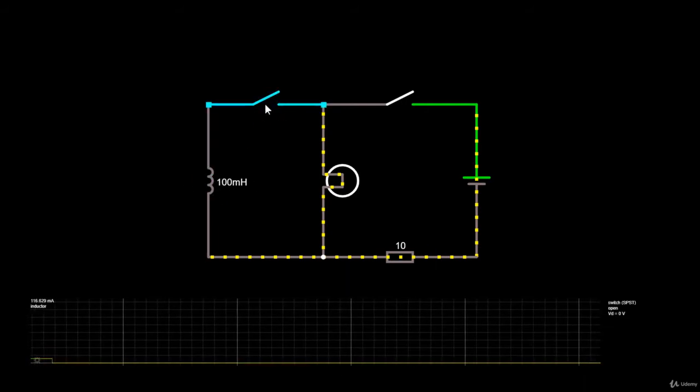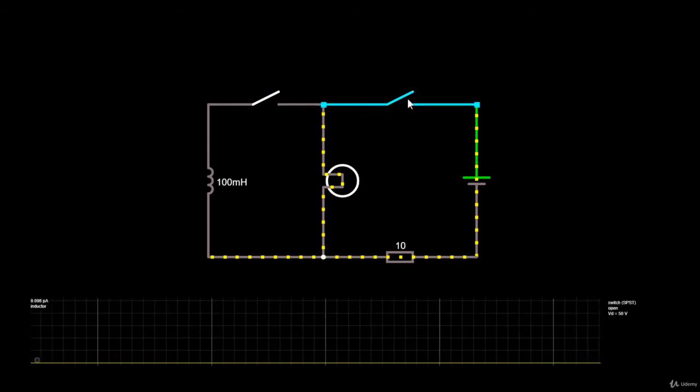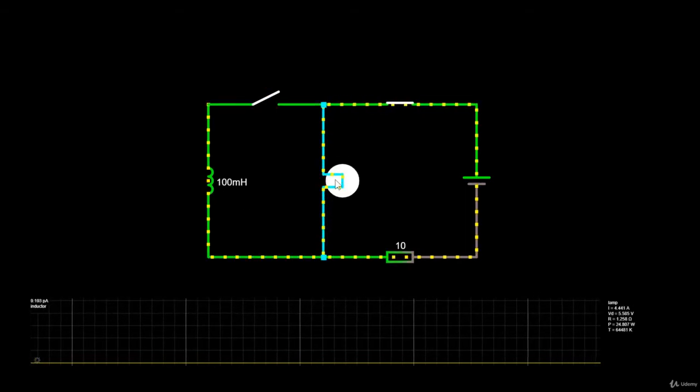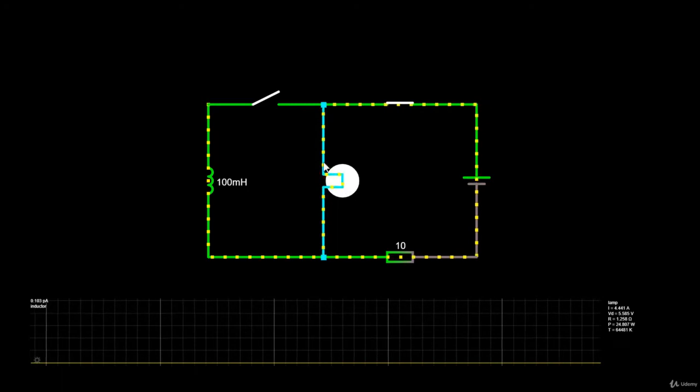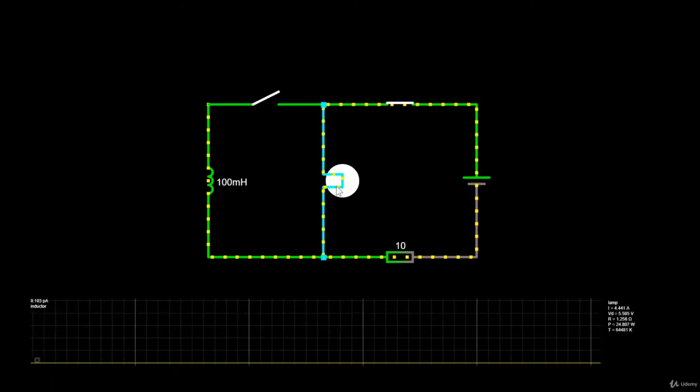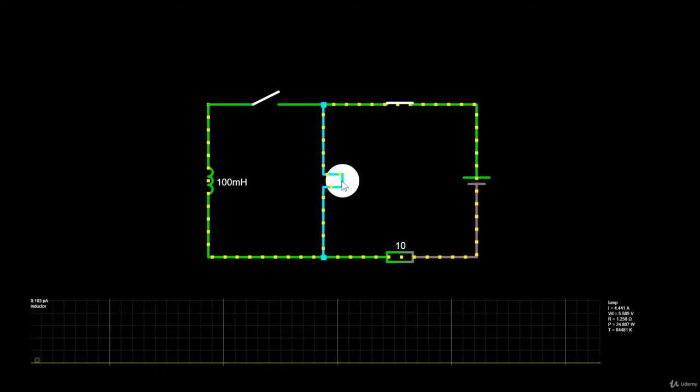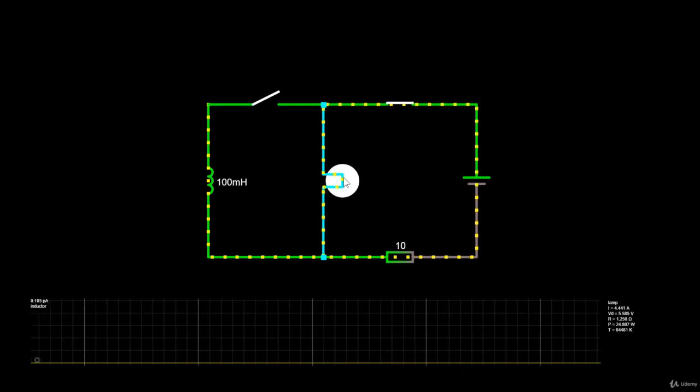If the inductor is taken out from the equation and I close the switch, the light bulb will light up, right? Nothing complicated here. The light bulb is just a resistor, and the resistance creates heat to make the filament in the bulb glow.